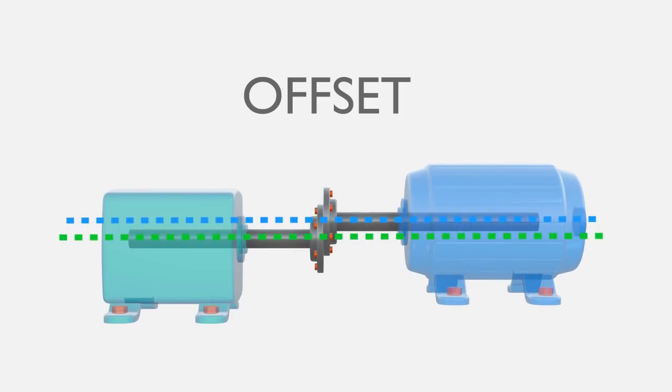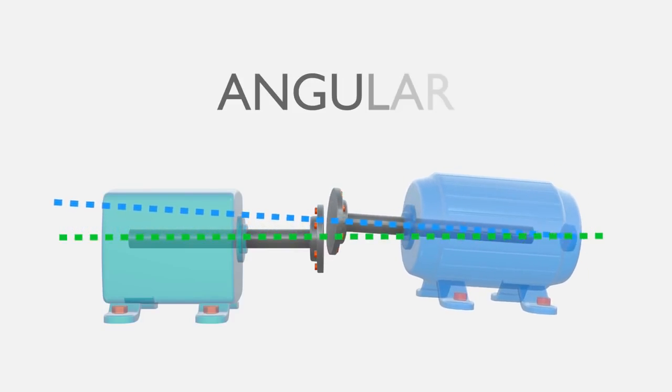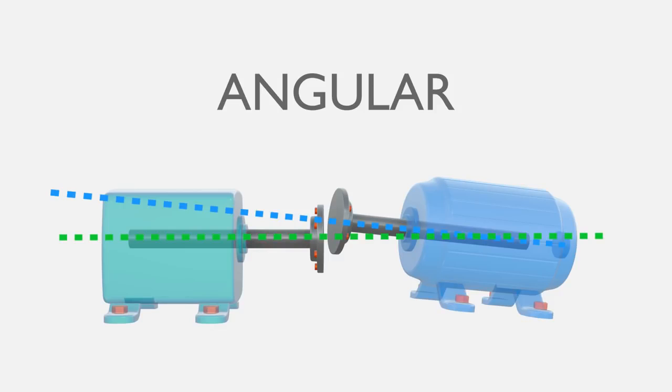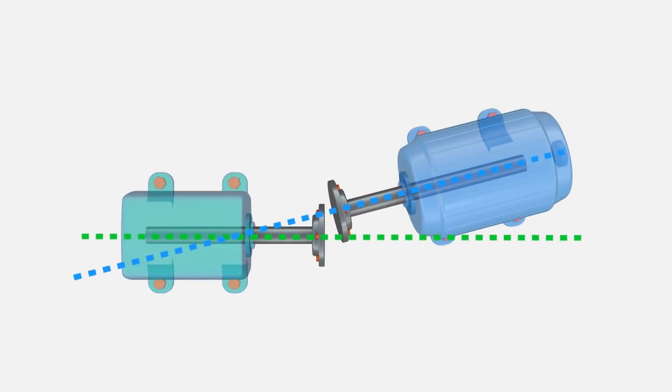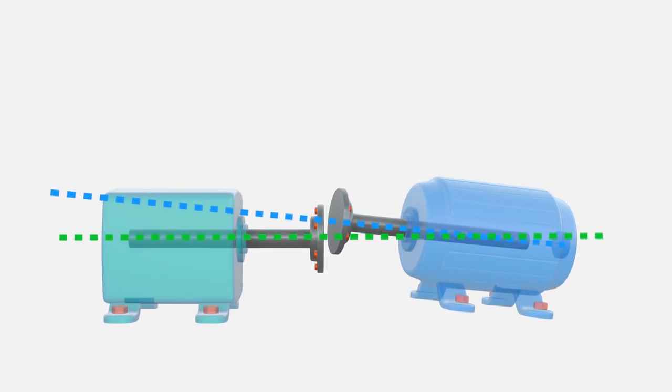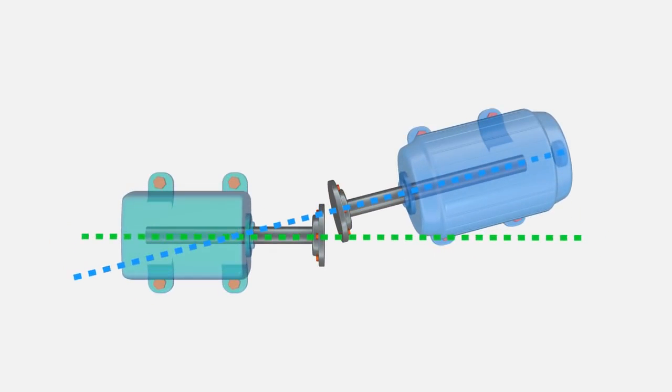Offset misalignment and angular misalignment. What we usually see in the field is a combination of both offset and angular misalignment, occurring in three dimensions, as you can see here, as we rotate between the vertical plane and the horizontal plane.